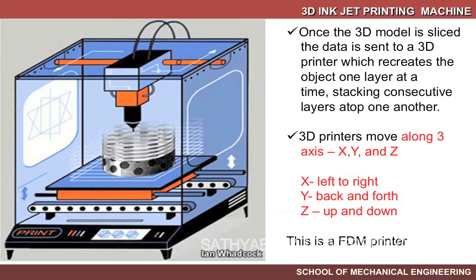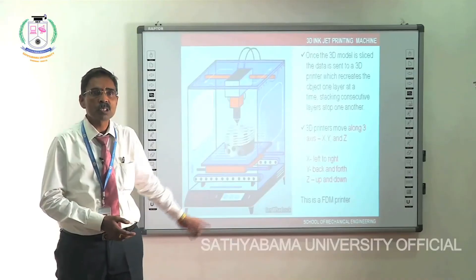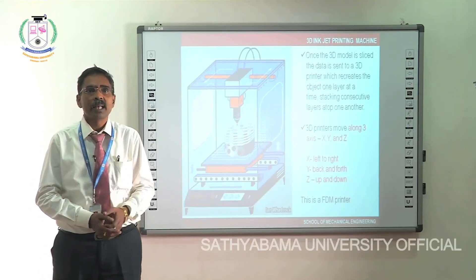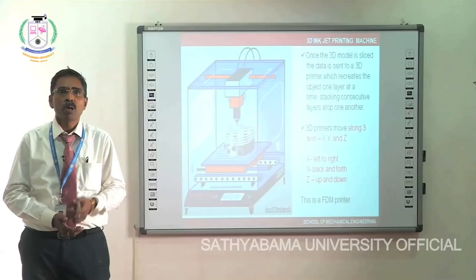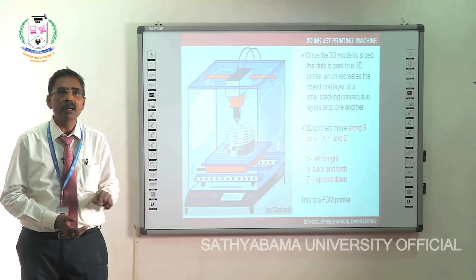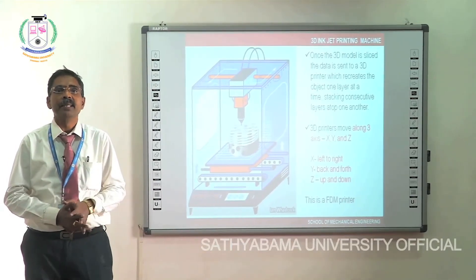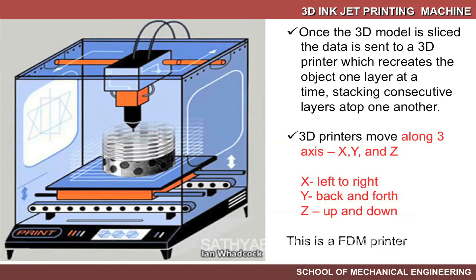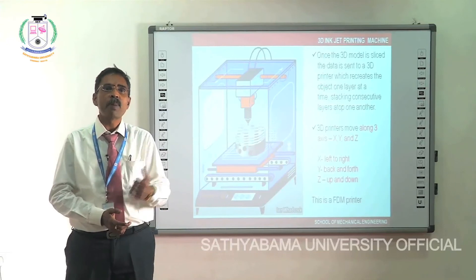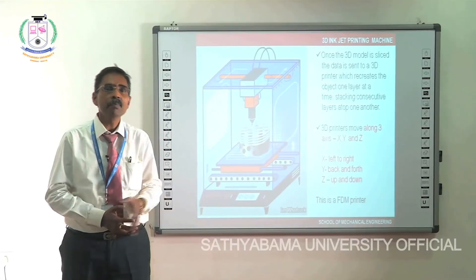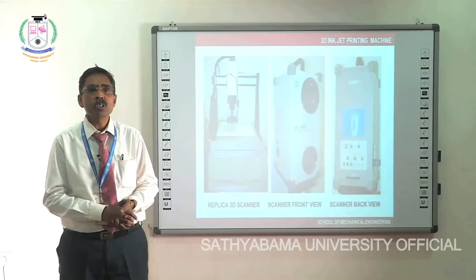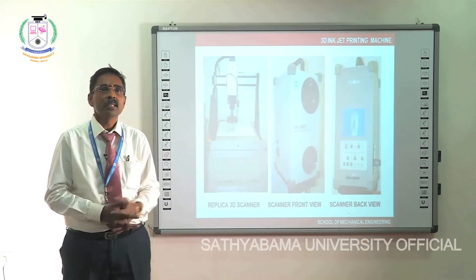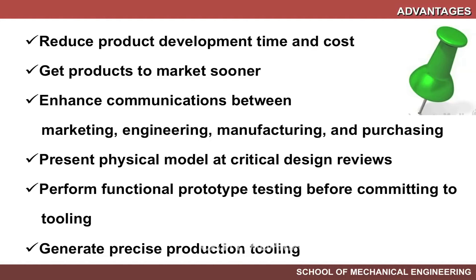The 3D printing machine consists of a platform, support structure, and a print head. Once the model is sliced, data is sent to the 3D printer and the required geometry is printed immediately. The printer moves in all three directions: X (left to right), Y (back to forth), and Z (up and down). This is called an FDM printer. Advantages include reduced cost and reduced product development time.